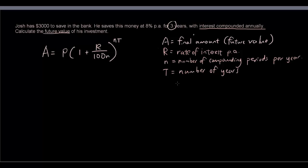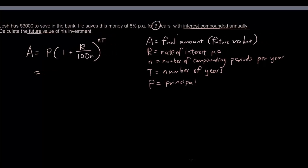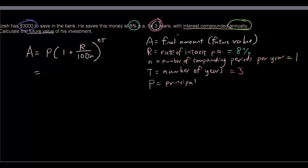Using these variables, let's put in the values. The rate of interest is 8%. The number of compounding periods per year is 1, because it says compounded annually. The number of years T is 3. And the principal P is $3,000.